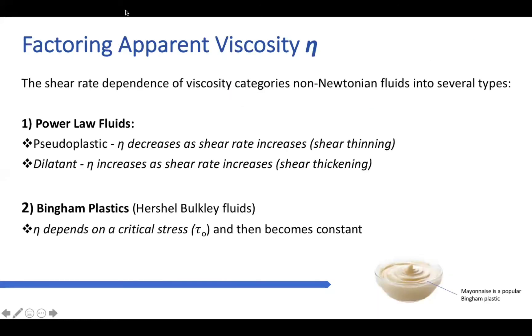It's important to factor the apparent viscosity factor mu. It shows the shear rate dependence of viscosity can be categorized with non-Newtonian fluids into two different types, power law fluids and Bingham plastics. There are two types of power law fluids. The first is pseudoplastic, which is that mu decreases as the shear rate increases or shear thinning. And dilatants, where mu increases as shear rate increases, so it's shear thickening.